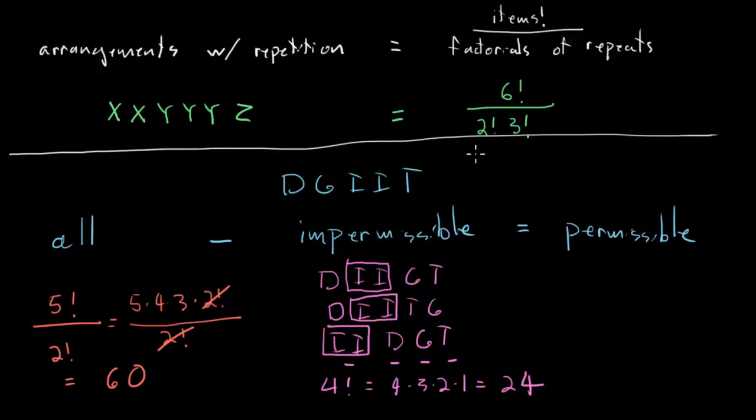And then we've got everything that we need to continue with our original plan, right? The total number of ways to arrange these guys, that was just 60. And then we subtract our impermissible, the impermissible 24. We get 60 minus 24 is 36 permissible versions left over. And that is answer choice D.